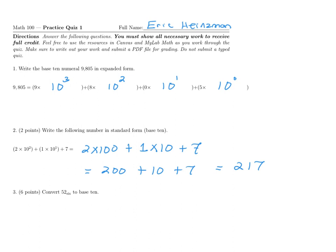In question three, we'd like to convert 52 base 6 into a base 10 number. The way we do this is by using basically both of these parts, the ideas that appeared in questions one and two. We're going to first expand out 52 base 6, and then we're going to simplify it down to a single number. This 5 here is in the 6 to the power of 1 place, and this 2 is in 6 to the power of 0.